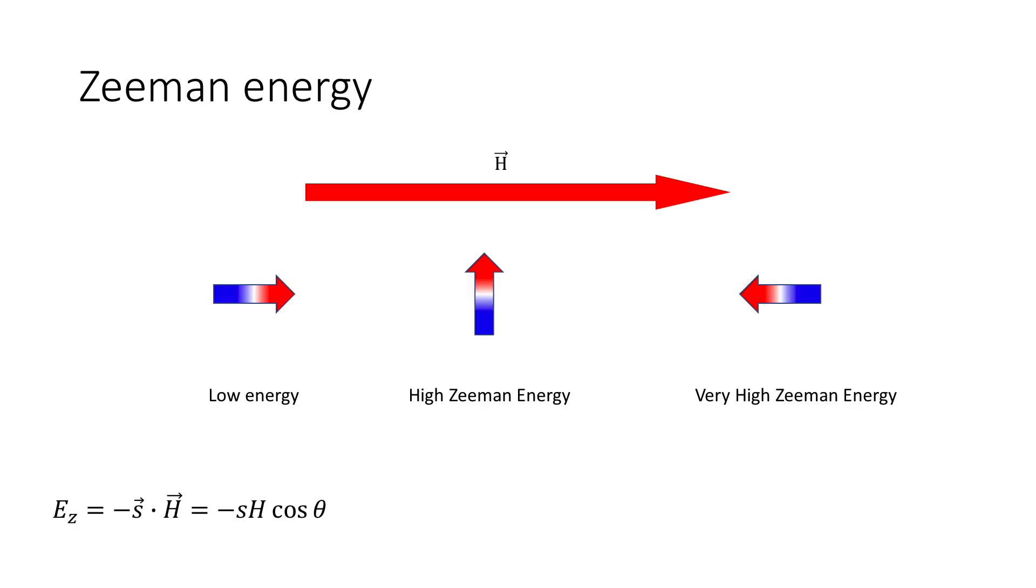When the spin or compass needle is aligned with the field, the Zeeman energy is at a minimum. The Zeeman energy increases with angle until the spin is anti-aligned with the field, at which point the energy is the highest.